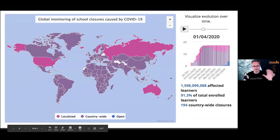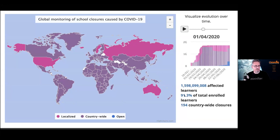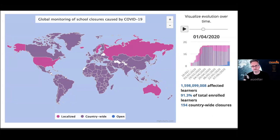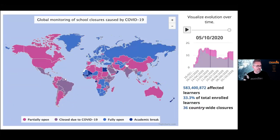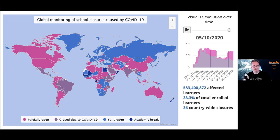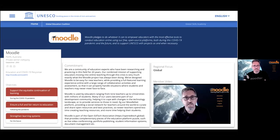Without dwelling on COVID too much, at its peak we had 91% of the world's learners suddenly having to go online. There's been a tremendous wave of activity coming from that for those of us working in this field. It's now down to around 33%, but with coronavirus rising in many places, there's still huge disruption happening in education. We joined UNESCO's global coalition very early and have been involved in some of the largest and most interesting projects we've ever seen.